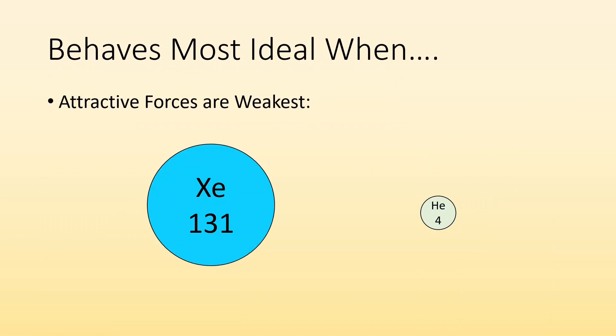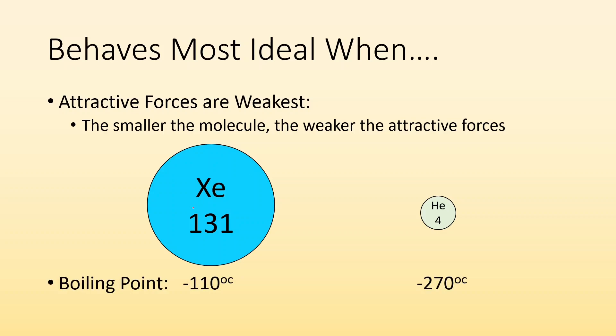What about attractive forces? When do they behave the most ideal? The smaller the molecule, the weaker the attractive force is. If we take a look at xenon, a noble gas with a mass of 131, its boiling point is negative 110 degrees Celsius. But if we take a look at helium, which has a mass of four, its boiling point is significantly lower. The attraction is a lot less in the smaller molecules. When do gases behave the most ideal? When they're really tiny.